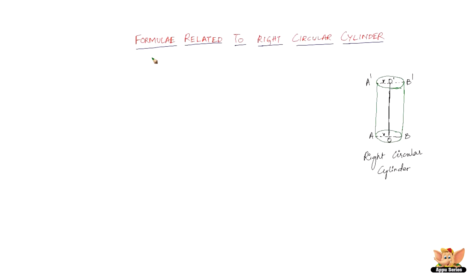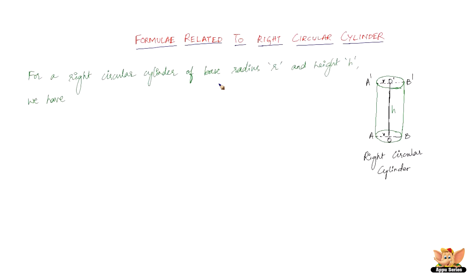In this video we've got a right circular cylinder and we'll be doing the formulas related to it. All the data we need is the radius of the circular ends, that is R, and the height between them, that is H. So H and R are the only two values we need to find everything else related to a right circular cylinder.